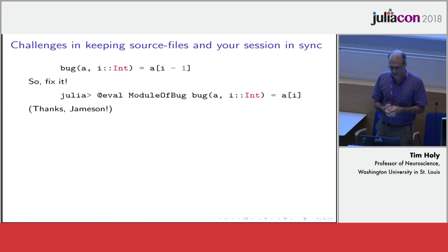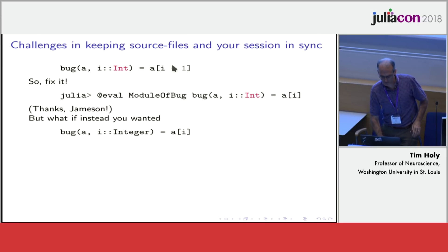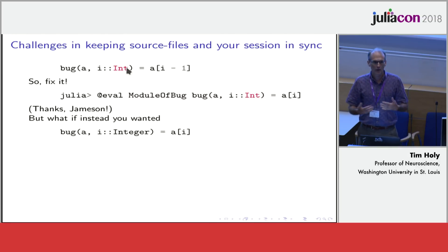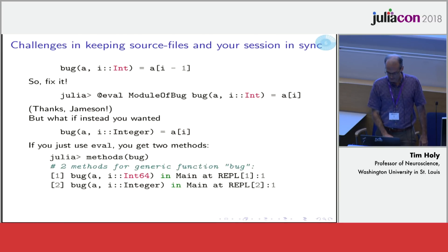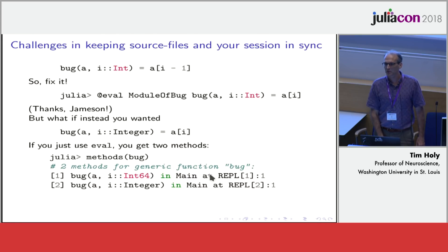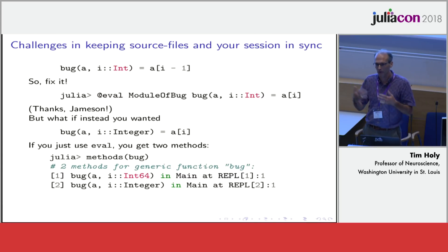However, this was not actually the full end of the story, because I had seen cases where it couldn't handle the kind of changes I wanted to make. A really good example: what if at the same time as fixing the bug, you wanted to generalize the signature for your function as well? If you evaluate that version, you end up with two methods of 'bug' — the fixed version, but it's of lower precedence than the buggy version. That means the session you're running isn't reflective of what would happen in a fresh session, so it's not very useful for continuing development or debugging.